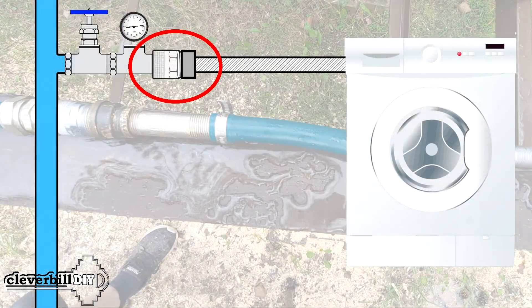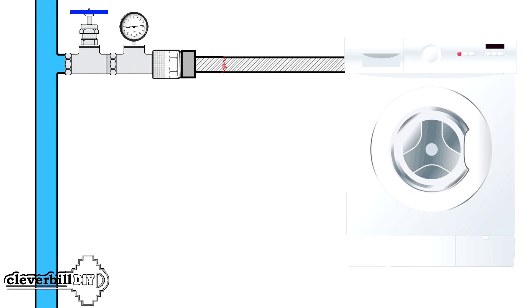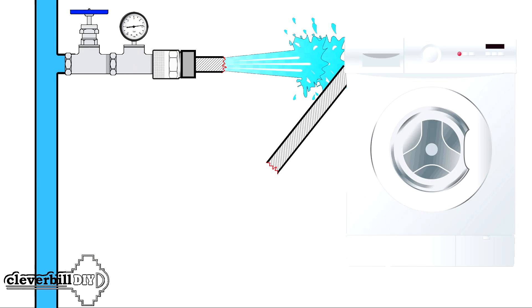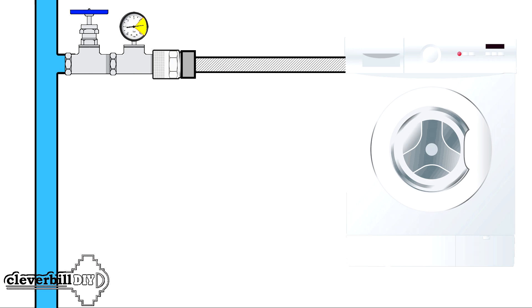What conclusions can be drawn from this? Such a valve is only able to protect against leaks with a completely burst hose, and for normal operation it requires compliance with certain conditions, proper water pressure and flow rate through it.